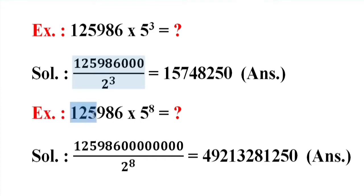Example: 125986 into 5 power 8 equal what? Solution: 12598600000000 by 2 power 8 equal 49213281250. Answer.